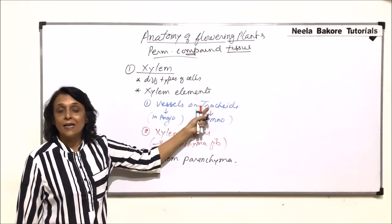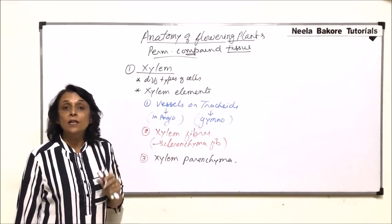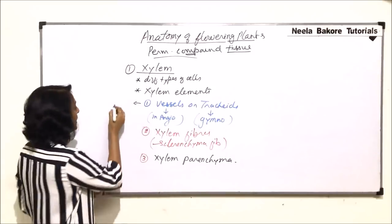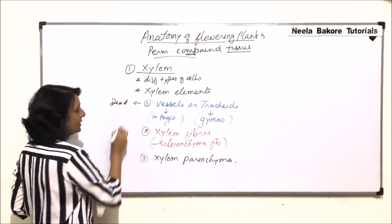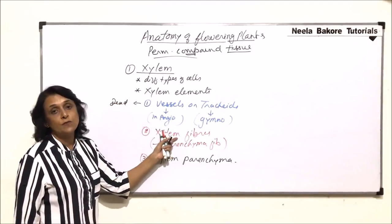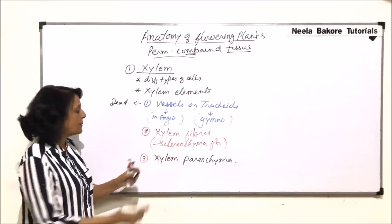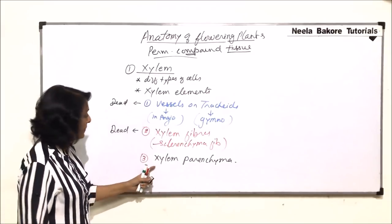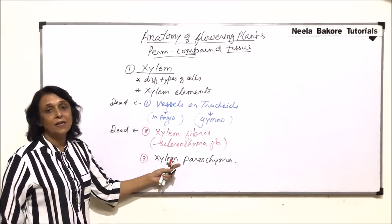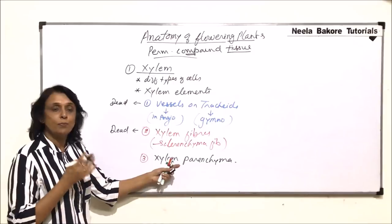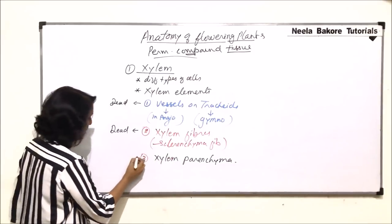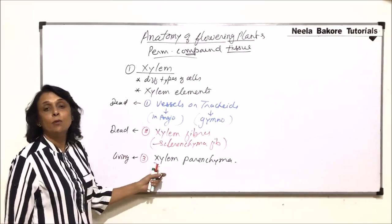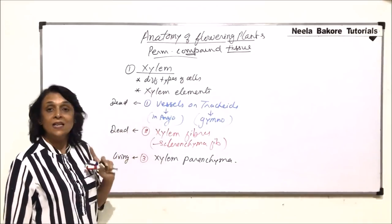Vessels and tracheids undergo lignification, meaning at maturity they are dead. Xylem fibers are sclerenchyma fibers and at maturity they are also dead. Xylem parenchyma is the living tissue with a primary or simple cell wall. So xylem parenchyma is the only living type of cell present in xylem.